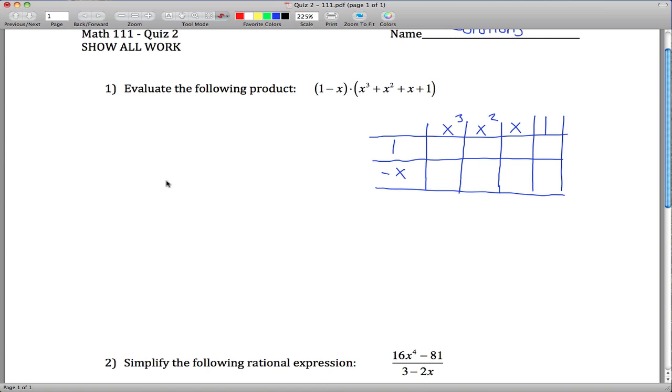Maybe we'll change colors so it's clear what's going on. 1 times x cubed is just x cubed, 1 times x squared, just x squared, 1 times x is x, 1 times 1 is 1. Negative x times x cubed is negative x to the fourth. You can think of this as x to the 1 and x to the third, and so you add the exponents. Negative x cubed, negative x squared, negative x.